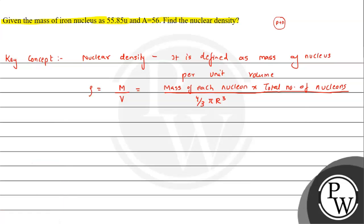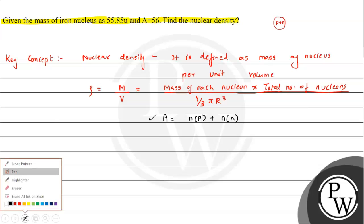Mass number is nothing but the sum of number of protons plus number of neutrons. This is how we can get the mass number. Now we can see that the density, that is nuclear density.